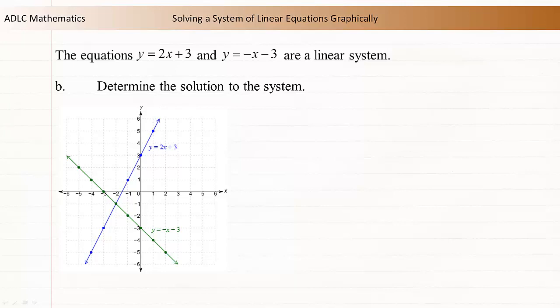Next, let's determine the solution to the system. A solution is an x value and a y value that satisfies both equations. We know that the blue line represents all the ordered pairs that satisfy the equation y equals 2x plus 3, and the green line represents all the ordered pairs that satisfy the equation y equals negative x minus 3, so their point of intersection is an ordered pair that satisfies both equations. The point of intersection occurs at negative 2, negative 1, so this is a solution to the system.